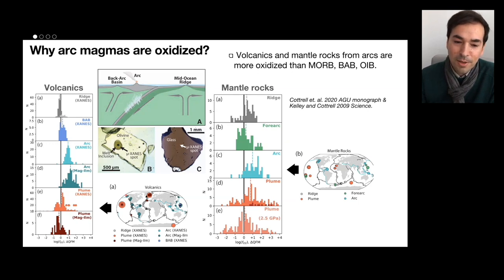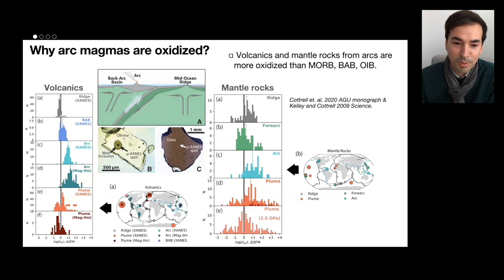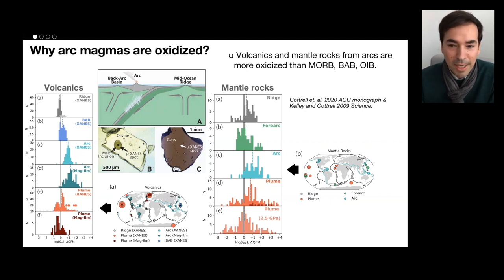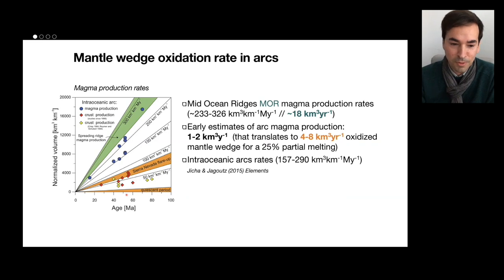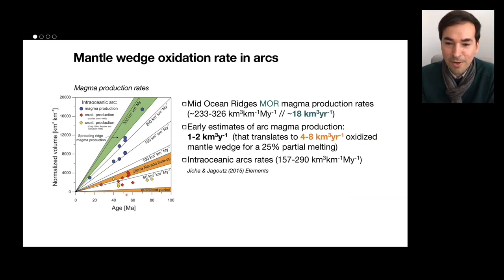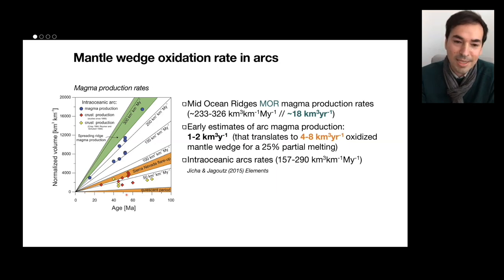But the ultimate reason why arc magmas are oxidized is not yet probably solved. It's not just the oxidation state of arc magmas — one thing is the oxygen fugacity that I will try to very briefly introduce later. But it's not just this property; it's actually the amount of magmas that are produced that are oxidized that needs to be answered.